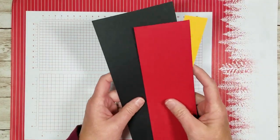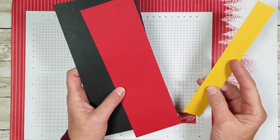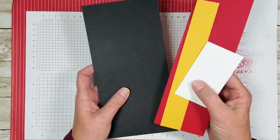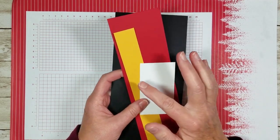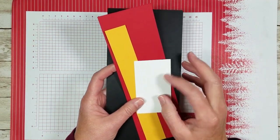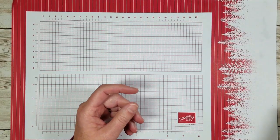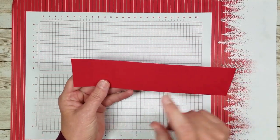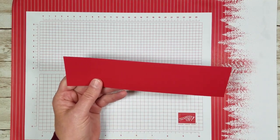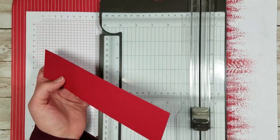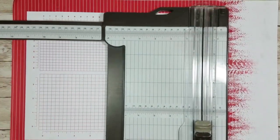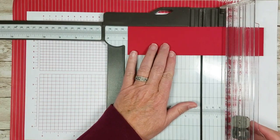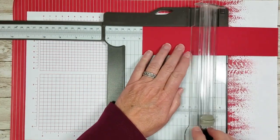You're going to need a scrap piece of black, red, yellow, and some white. I'm using Stampin' Up basic black, real red, crushed curry, and whisper white. You need to cut your red strip two by eight and a half. This is going to be the Santa suit. Then you're going to score it at three and three-fourths.